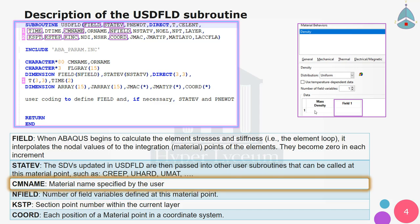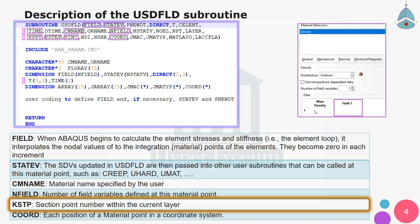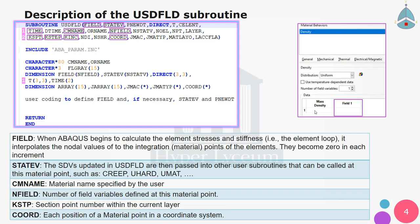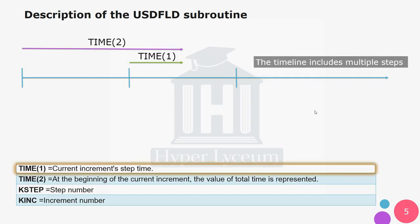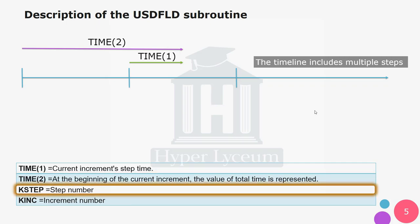The next parameter is CMNAME, which is the material name specified by the user — useful when we have multiple materials in our code. NFIELD is the number of field variables defined in Abaqus. KSTEP is the step number. The last parameter, COORDS, contains the location of the material point in a coordinate system. TIME(1) is the time from the beginning of the step to the current increment, and TIME(2) is the total time from the beginning of the analysis.